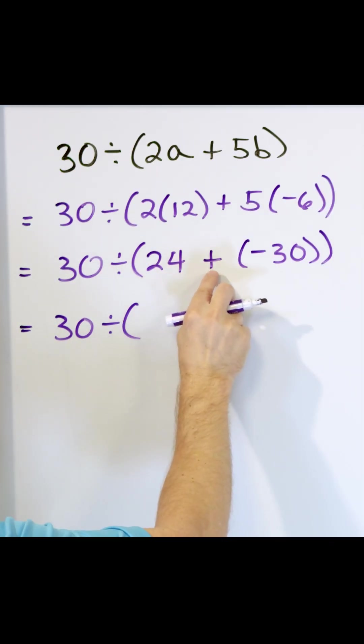So on the inside I have 24 plus a negative 30. They're opposite signs, so I subtract. 30 minus 24 is 6, and this is the larger absolute value, so it's really negative 6.